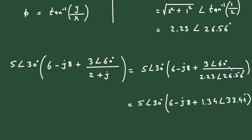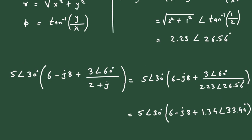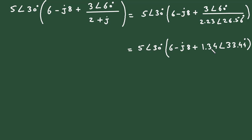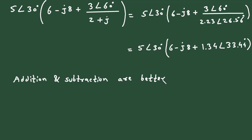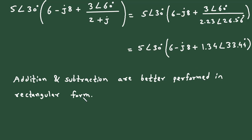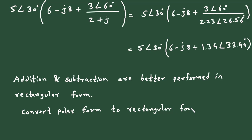Now we need to add 6 − j8 and 1.34∠33.44°. We can see one term is in polar form and the other is in rectangular form. Since addition and subtraction are better performed in rectangular form, we will convert 1.34∠33.44° to rectangular form.